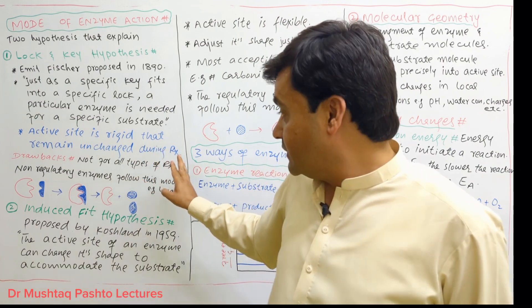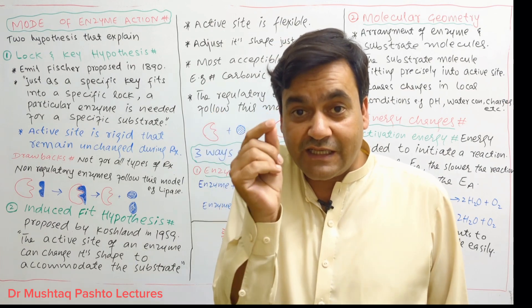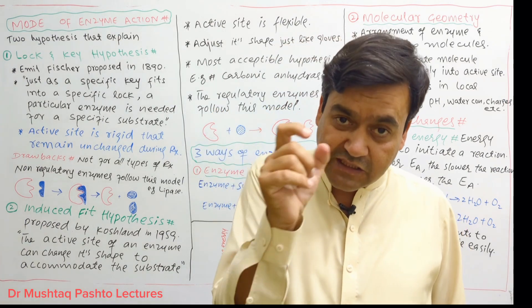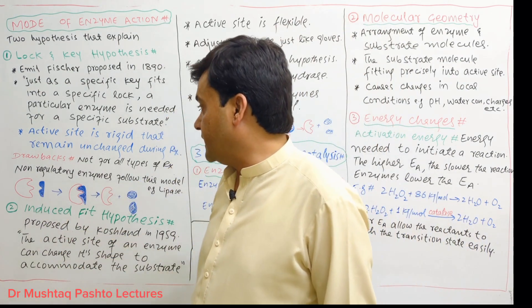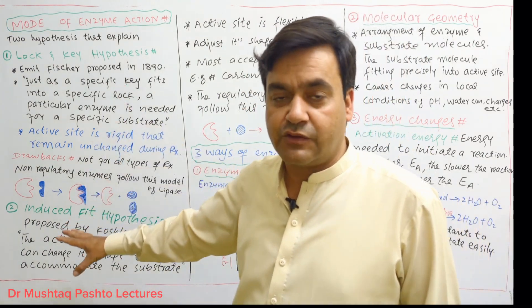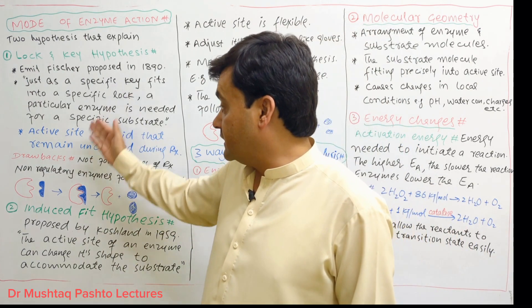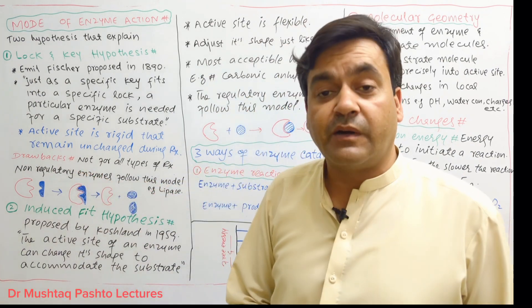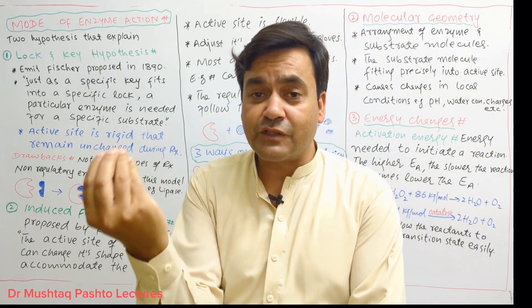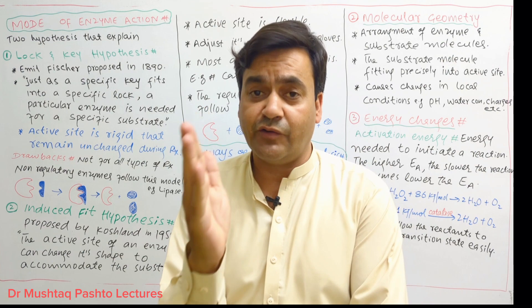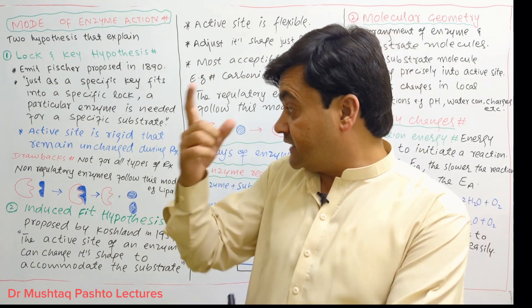The active sites are rigid, meaning they remain unchanged during the reaction. This model assumes the active site is rigid. This is true for some enzymes but not for all reactions. This is the non-regulatory enzyme, the model followed by lipase. Non-regulatory enzymes are also called non-allosteric enzymes, which have only one active site and no modulator is necessary.